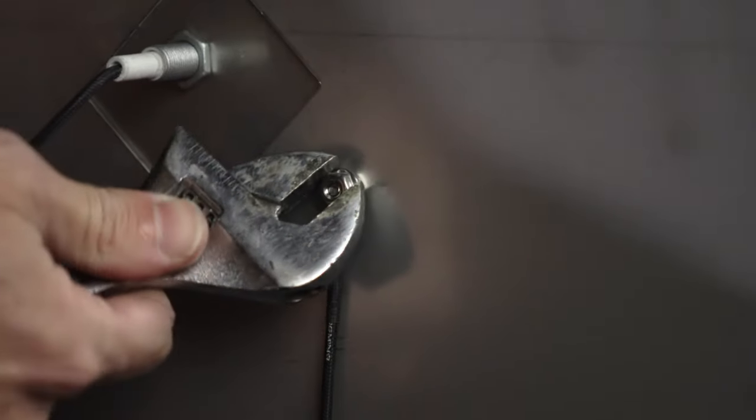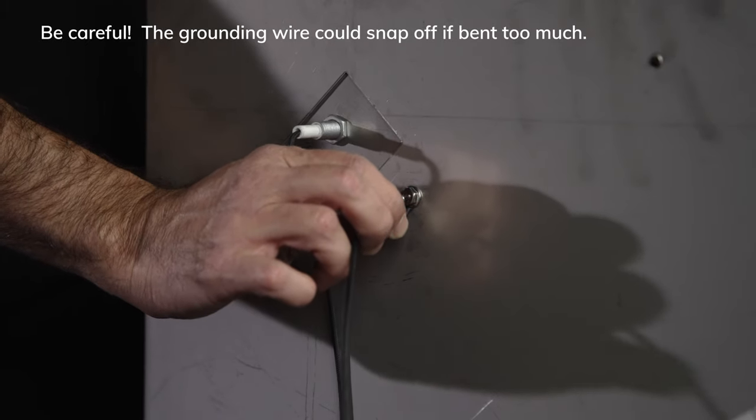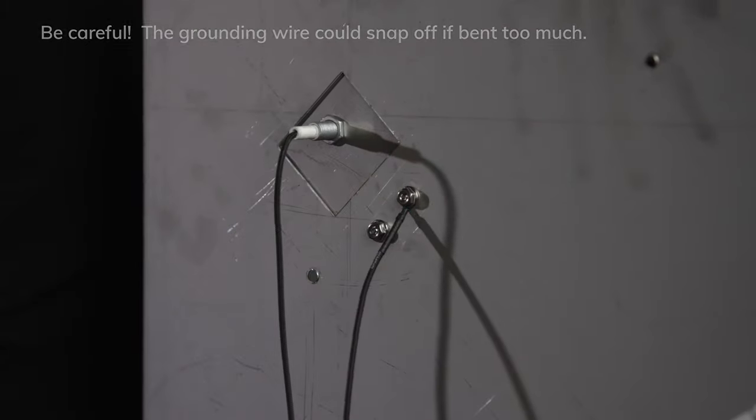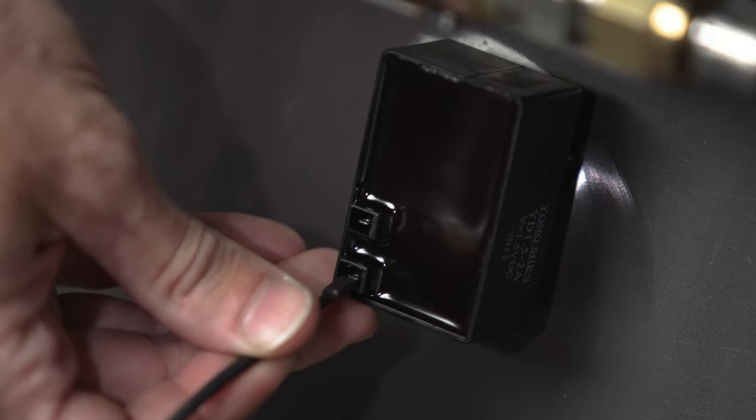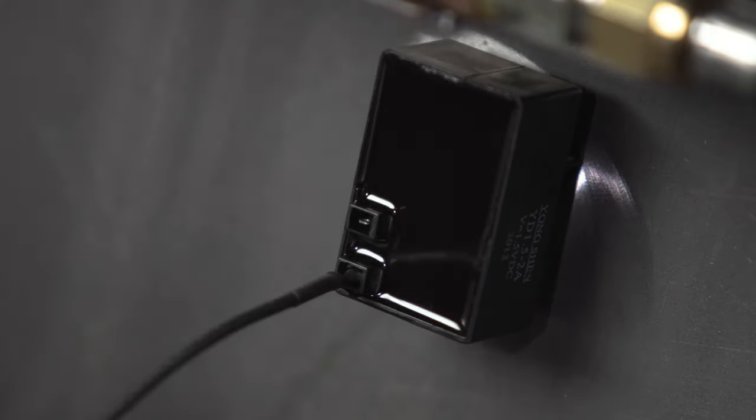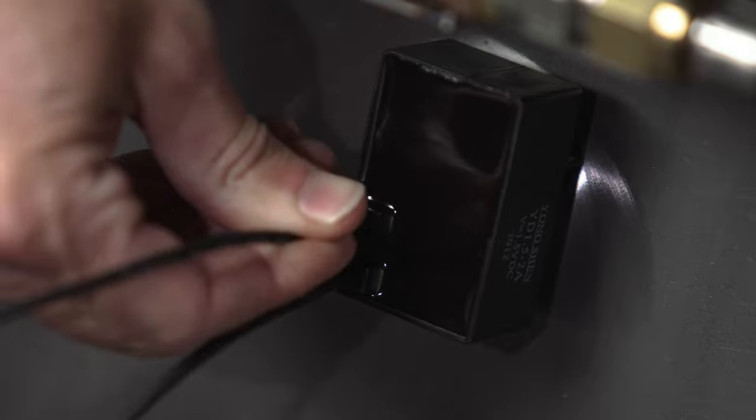Angle the grounding wire down and away from the pan to prevent it from overheating. Attach both wires to the backside of the spark module. It doesn't really matter which wire connects to which prong.